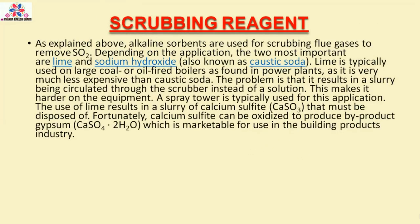Scrubbing Reagents: Alkaline sorbents are used for scrubbing flue gases to remove SO2. The two most important are lime and sodium hydroxide (also known as caustic soda). Lime is typically used on large coal or oil-fired boilers as found in power plants, as it is much less expensive than caustic soda. The problem is that it results in a slurry being circulated through the scrubber, which makes it harder on the equipment. The use of lime results in a slurry of calcium sulfite that must be disposed of. Fortunately, calcium sulfite can be oxidized to produce by-product gypsum, which is marketable for use in the building products industry.